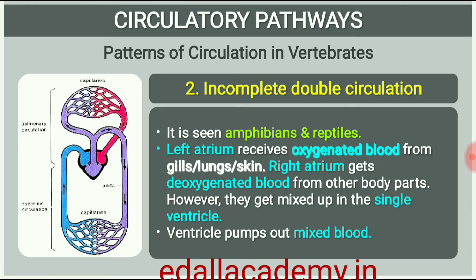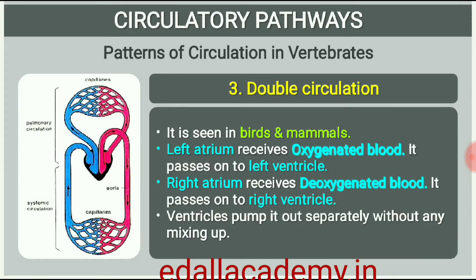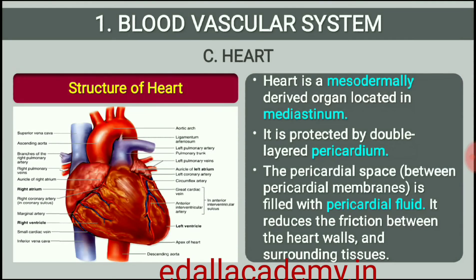In birds and mammals, oxygenated and deoxygenated blood received by the left and right atria respectively passes on to the ventricles of the same sides. The ventricles pump it out without any mixing up; that is, two separate circulatory pathways are present in these organisms, hence these animals have double circulation. Let us study the human circulatory system.